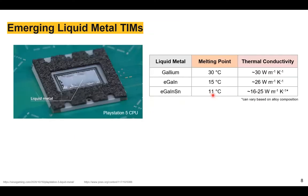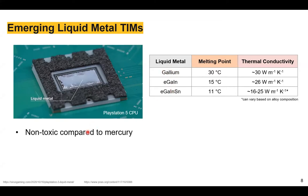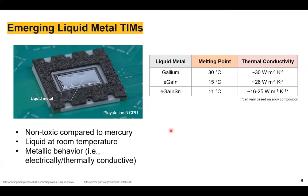One way being explored in academia and increasingly in industry is the use of liquid metals as an alternative TIM. A recent commercial example is the liquid metal TIM in the PlayStation 5 console, used to draw heat away from the CPU. These liquid metals are based on gallium and gallium-related alloys, which are non-toxic compared to mercury. They have very low melting points at or below room temperature while retaining metallic behavior — being both electrically and thermally conductive. Their thermal conductivity is higher than polymers but falls in an intermediate regime compared to metals like copper.